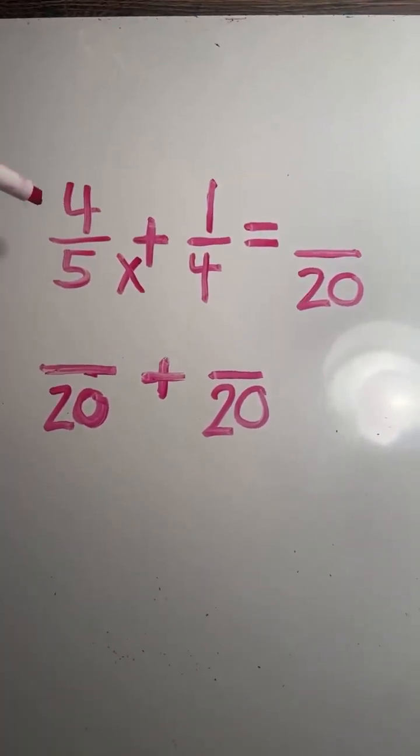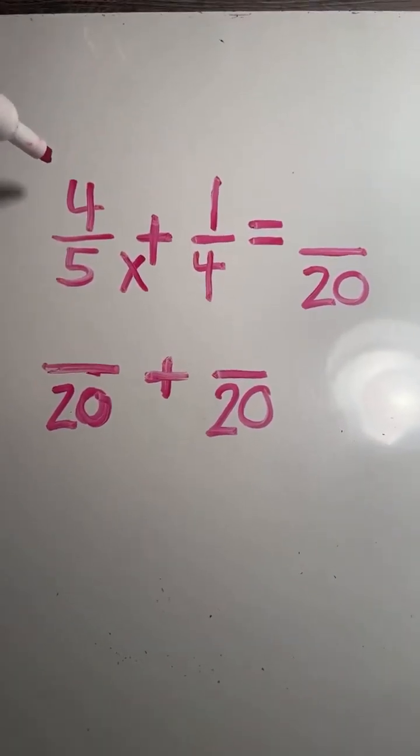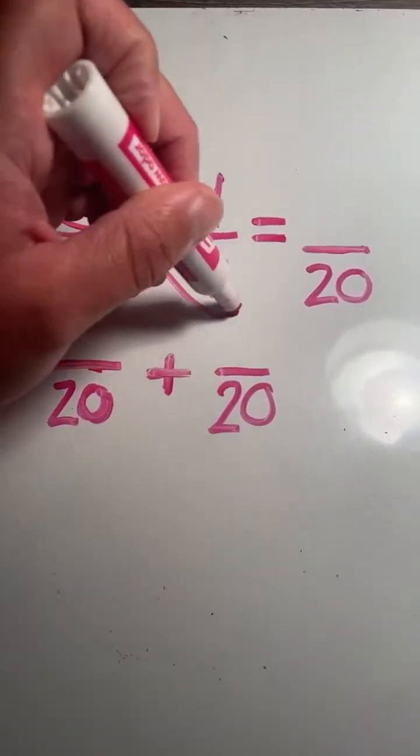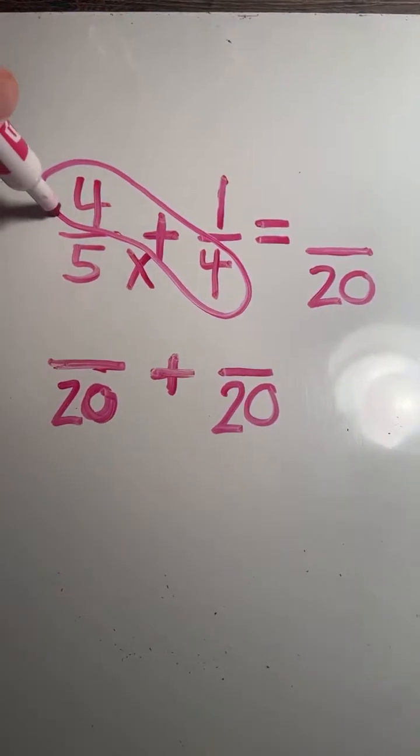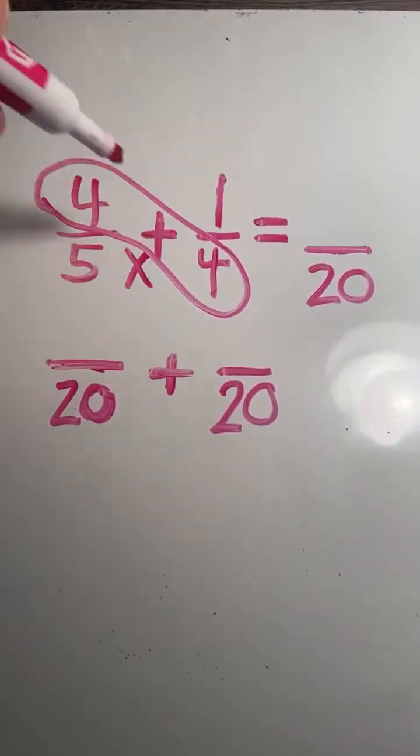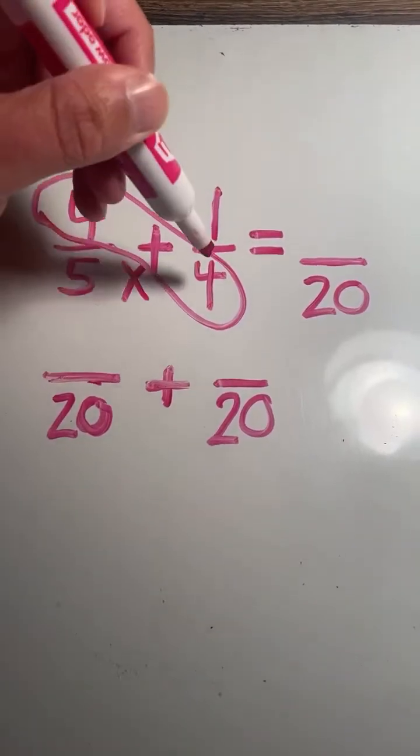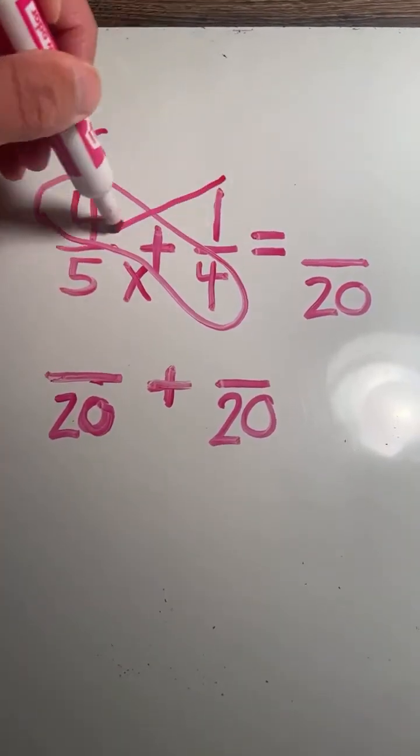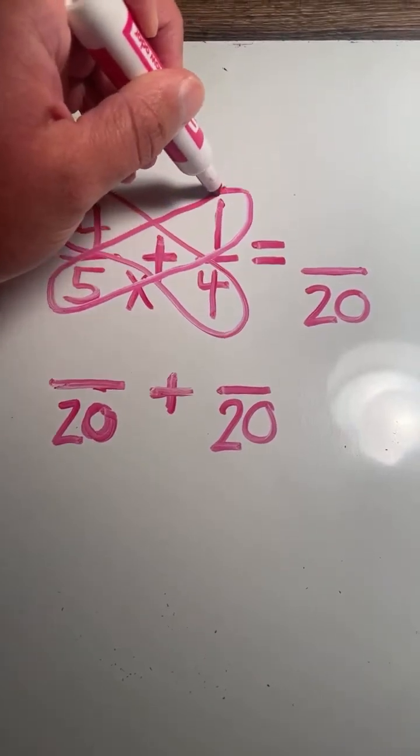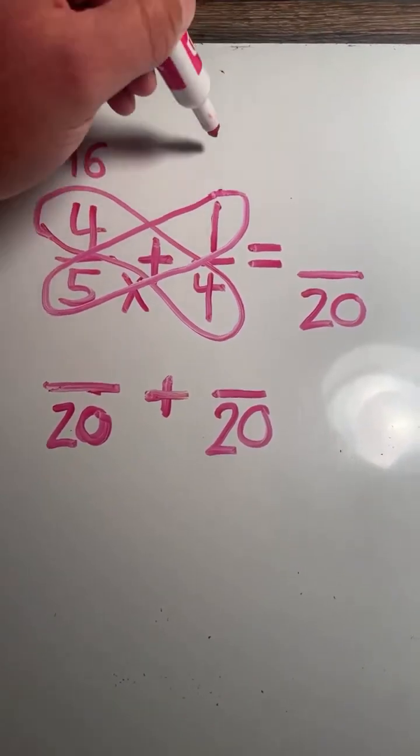Now to find our numerators, we have to multiply each numerator times the opposite denominator. So we're going to multiply the four in four-fifths times four. Four times four equals 16. Then the one in one-fourth, we multiply that times five. One times five equals five.